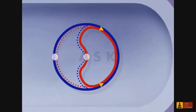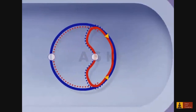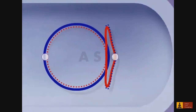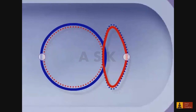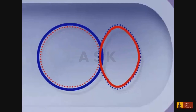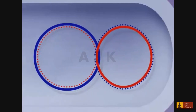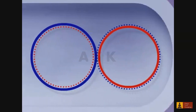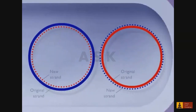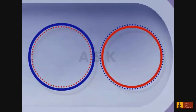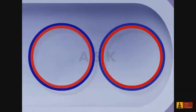The two original strands, shown as solid lines, serve as the templates for synthesis of new strands, shown as dotted lines. This is referred to as semi-conservative replication.